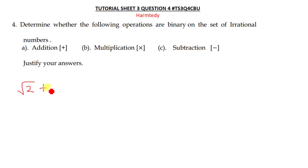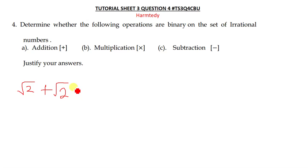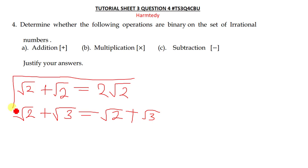We can take any two irrational numbers — maybe the root of two plus the root of two. When we add those two irrational numbers, we get two root two. Let's also try the root of two plus the root of three. Since we don't have calculators, we just leave it as root two plus root three.